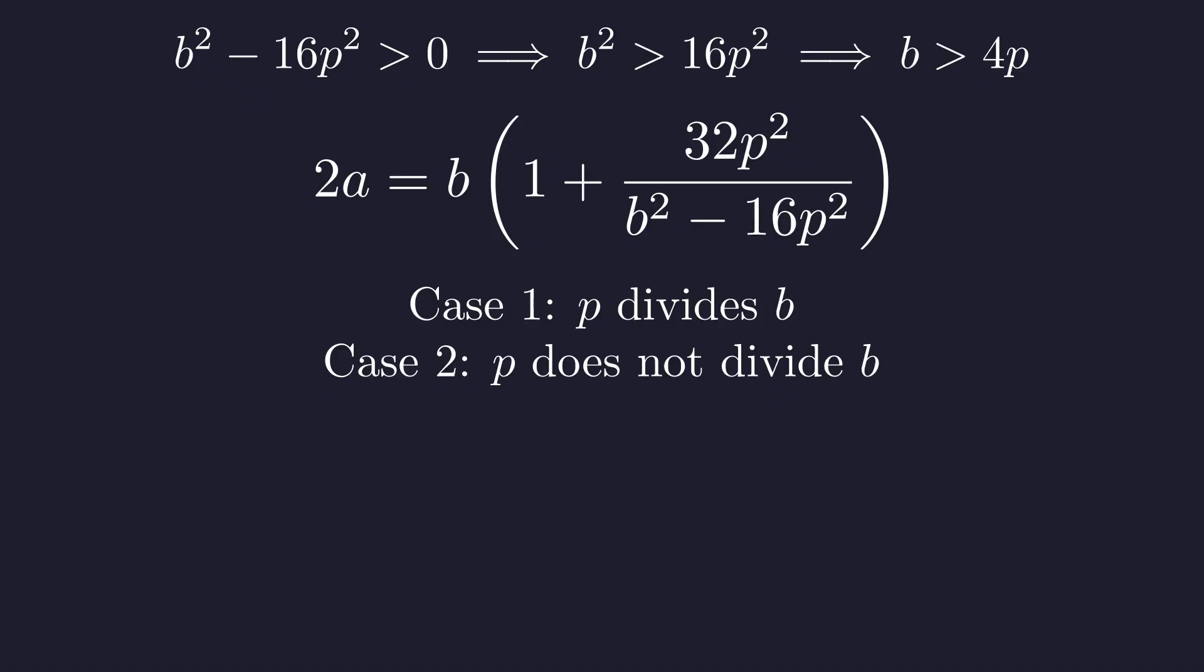Now here's where the primality of p becomes crucial. This divisibility condition splits naturally into two cases. Either p divides b or it doesn't. Let's tackle case 1 first. If p divides b, then we can write b equals k times p for some integer k. Since b is bigger than 4p, we need k to be at least 5.